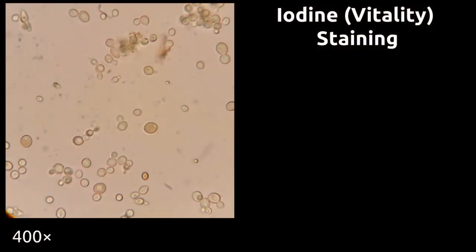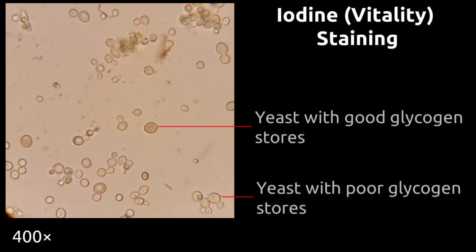Yeast stained with iodine will show a couple of different patterns depending on how much glycogen they have. Yeast with large quantities of glycogen will stain dark brown, with the entire interior of the cell staining a solid color. Yeast with moderate levels of glycogen will appear spotty, as individual glycogen granules will be stained, but the space between them will remain without any iodine.